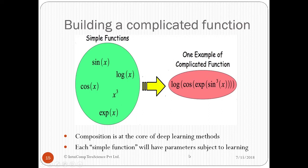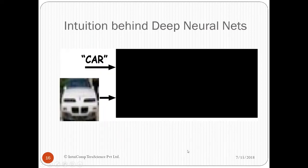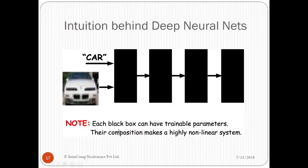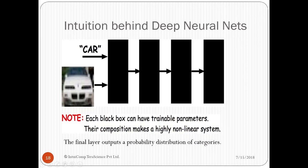Now, intuition behind deep neural nets. We can see the car, and let's understand how deep neural nets work with the help of an example. As you can see, an image of car is fed into the system. Note, each black box can have trainable parameters, their composition makes a highly non-linear system. The final layer outputs a probability distribution of categories. The category or class with the highest probability is the prediction of the image by the system.